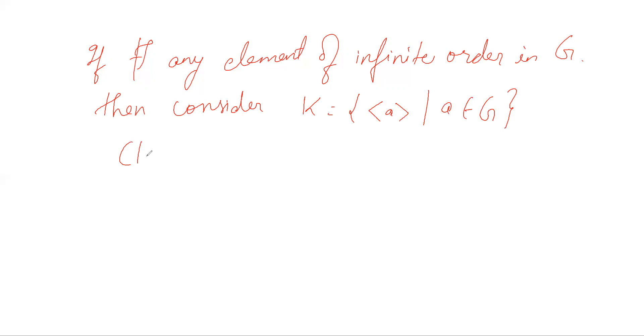We claim that |K| = ∞. The proof is by contradiction.